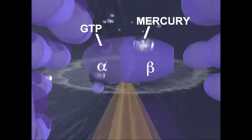Since bound GTP normally provides the energy which allows tubulin molecules to attach to one another, mercury ions bound to these sites prevent tubulin proteins from linking together.